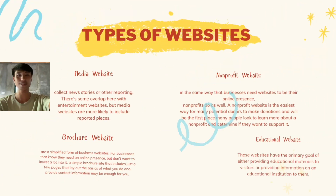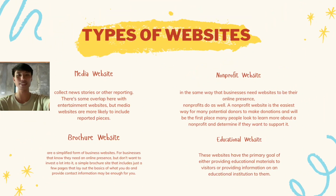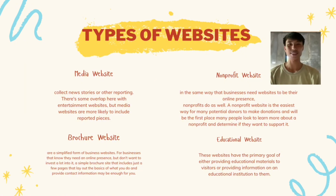The next one is a Media Website. Media websites collect news stories or other reporting. There is some overlap with Entertainment Websites, but Media Websites are more likely to include reported pieces. Examples are CNN, ESPN, and National Geographic.